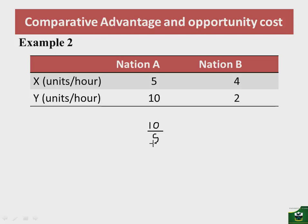So you take the foregone — which is 10Y — over the gain, which is 5X. You are giving up 10 and getting 5, so to get the per unit value: for nation A to produce 1 unit of X, it will need to give up 2 units of Y.